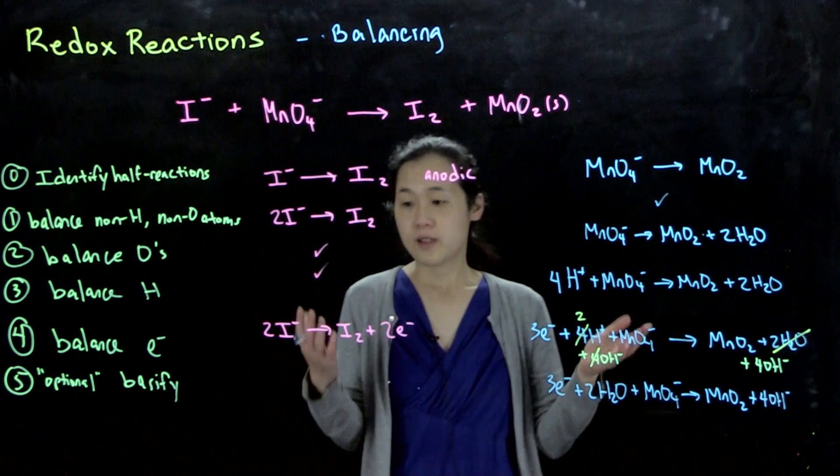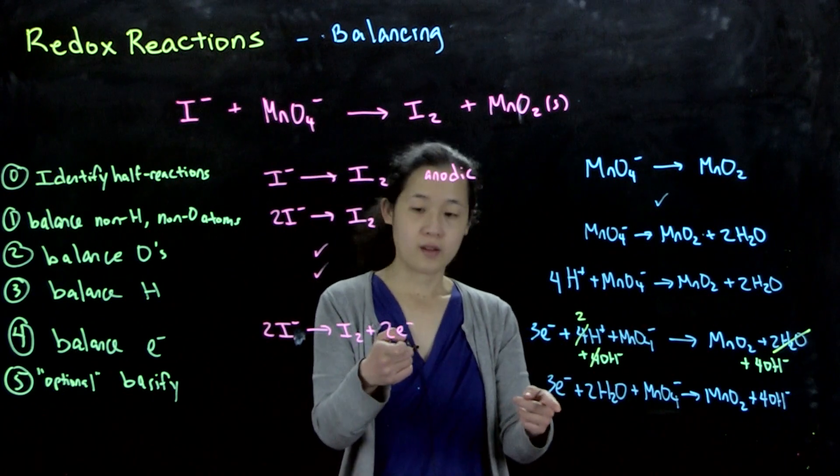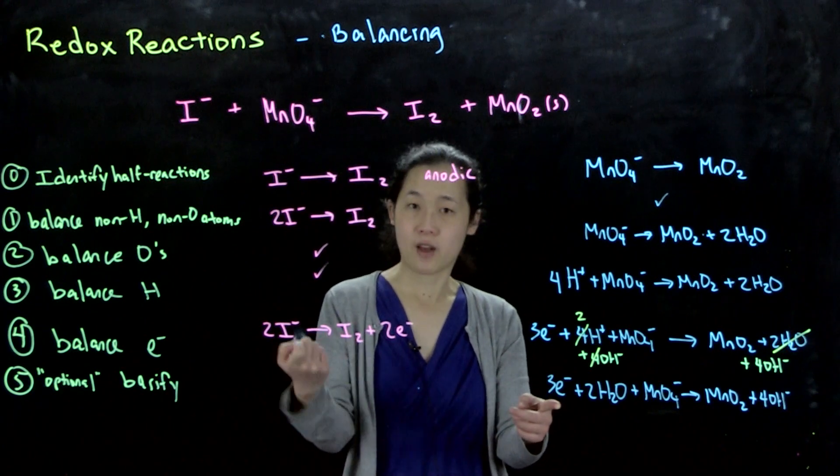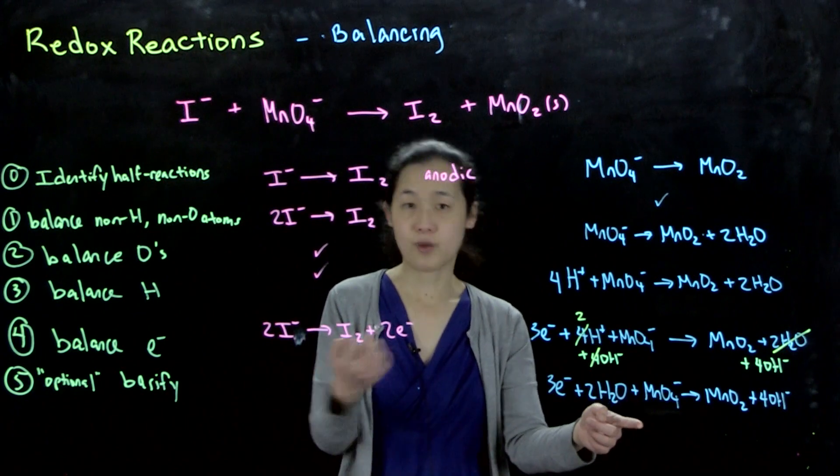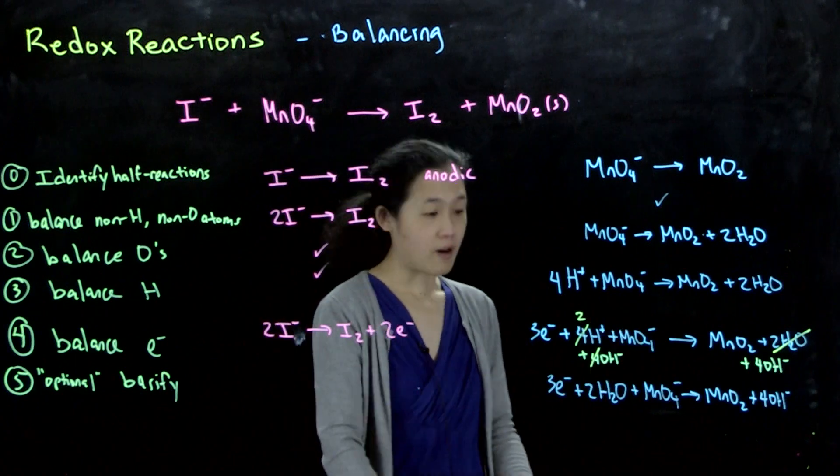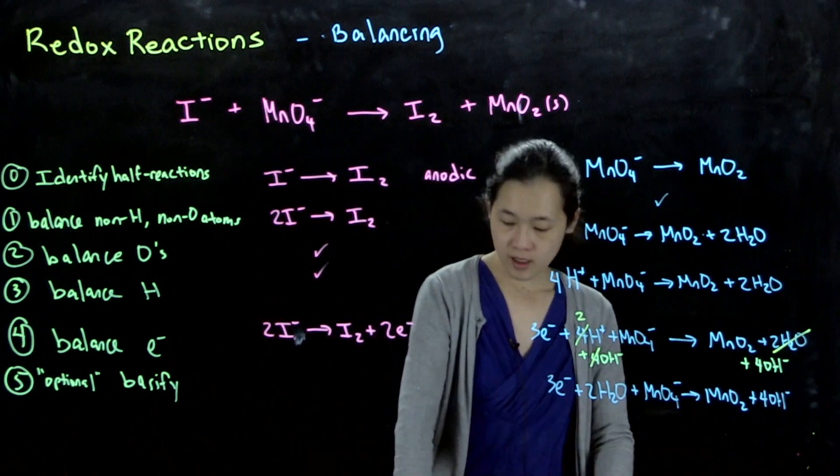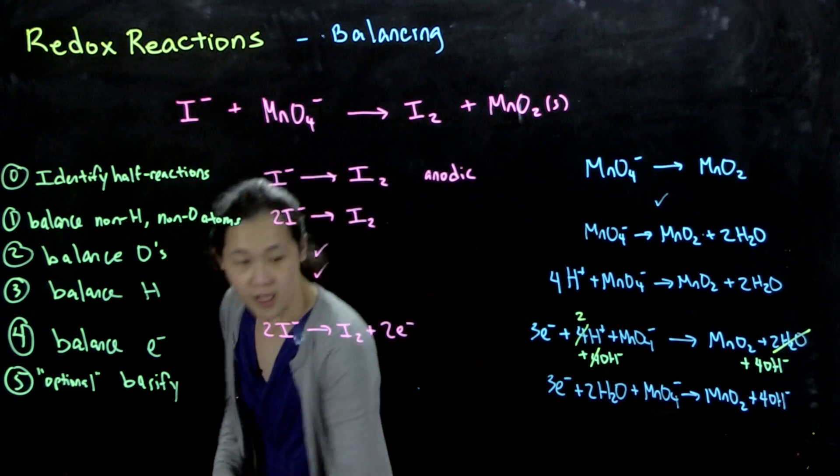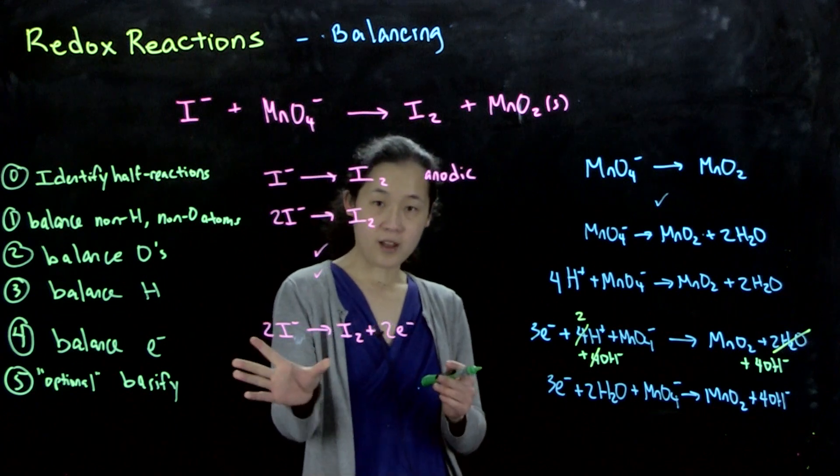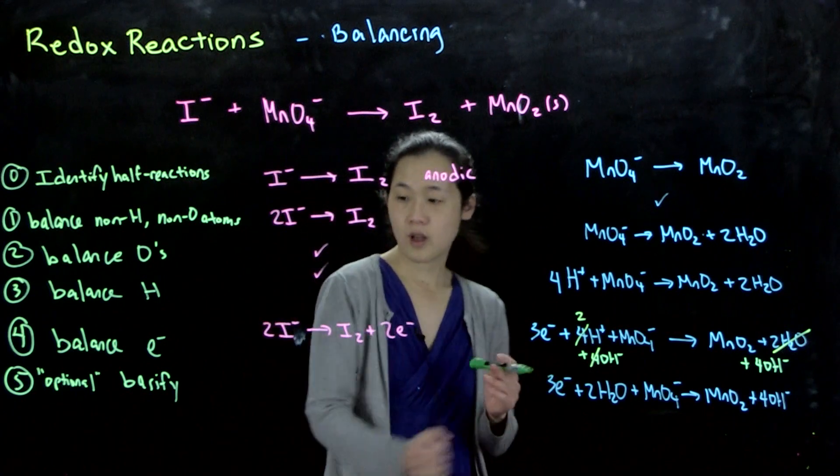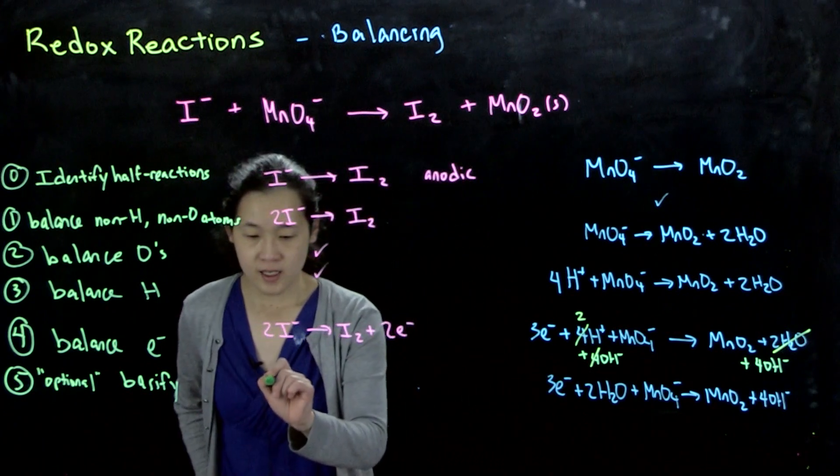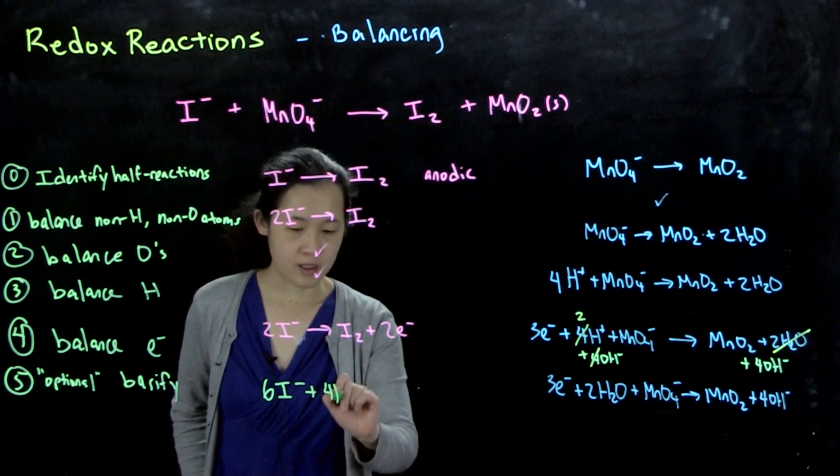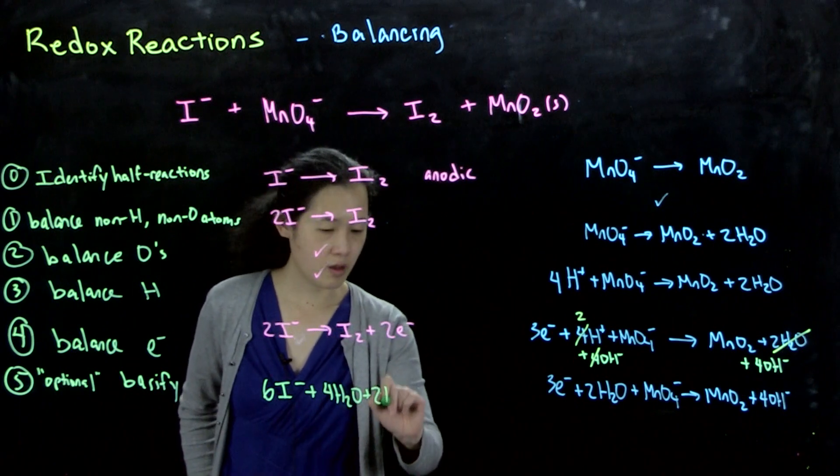Now we have our balanced half-reactions. What we need to do is then combine it and make sure that our numbers of electrons work out. Two electrons and three electrons - the only way we can have a common denominator is if we multiply this by three and multiply this by two, so we have six electrons overall. So our final combined equation - we'll multiply this half-reaction by three, this half-reaction by two.